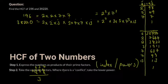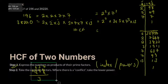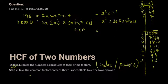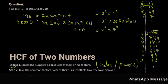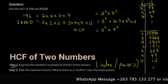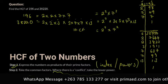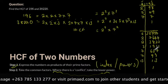After completing the first stage, take only the common factors to find the HCF. The common factors between 196 (2² × 7²) and 38,220 (2² × 3 × 5 × 7² × 13) are 2 and 7. Where there's a conflict in powers, take the lower power. Here both have 2² and both have 7², so there's no conflict. The HCF equals 2² × 7².